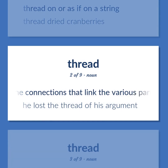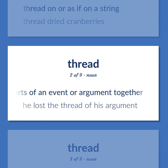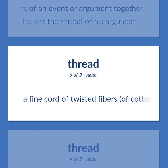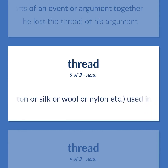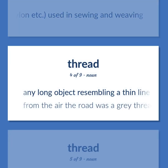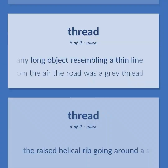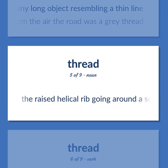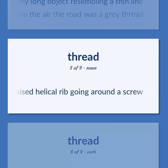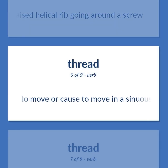The connections that link the various parts of an event or argument together. He lost the thread of his argument. A fine cord of twisted fibers, of cotton or silk or wool or nylon etc., used in sewing and weaving. Any long object resembling a thin line. From the air the road was a gray thread. The raised helical rib going around a screw. To move or cause to move in a sinuous, spiral, or circular course.